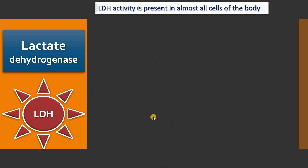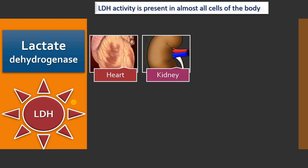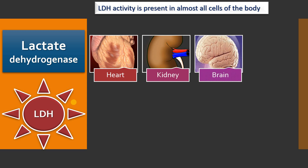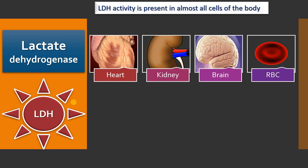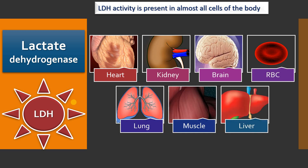This enzyme is widely distributed in our body — it is present in almost all cells. Lactate dehydrogenase enzyme levels are predominant in the heart, kidney, brain, RBC, lungs, and skeletal muscles and liver.